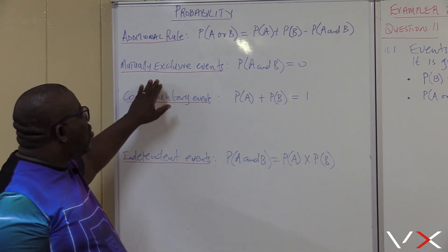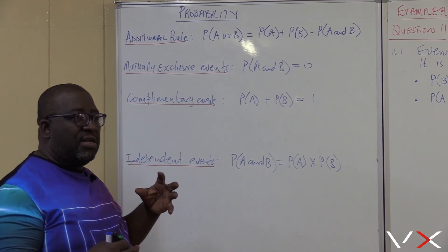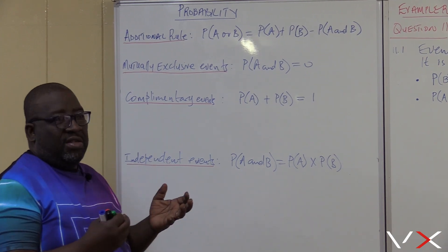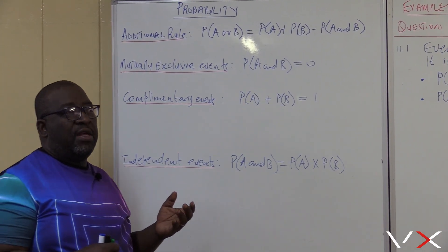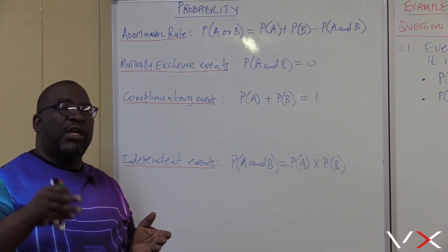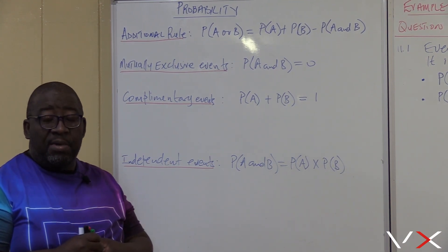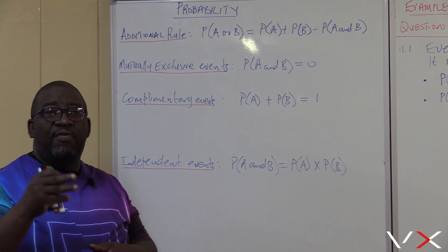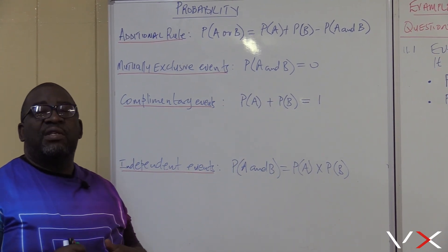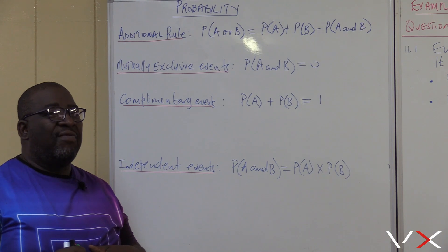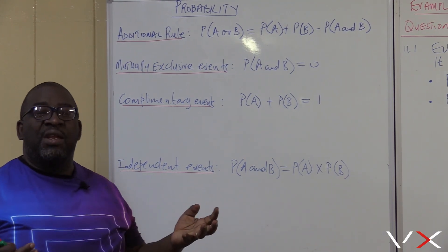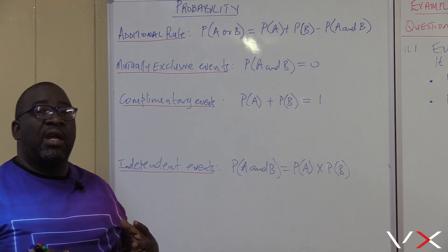What are mutually exclusive events? Those are events that do not have an intersection. For example, if we have even numbers — 2, 4, 6, 8, 10 — and we have odd numbers — 1, 3, 5, 7, 9 — do we have an intersection there? No, we don't. You'll never find an even number that is an odd number, so there is no intersection there.